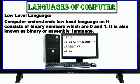Low-level language consists of binary numbers which are zero and one. It is also known as binary or assembly language. The computer only understands binary numbers — 0 and 1. When we feed binary numbers, it produces output on screen.